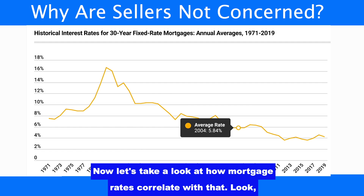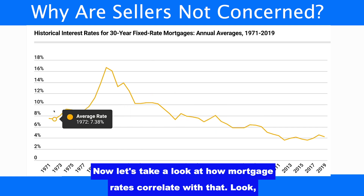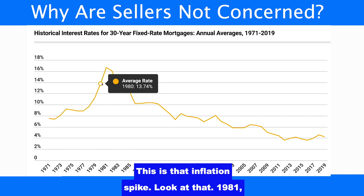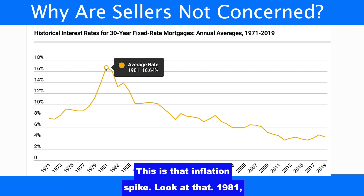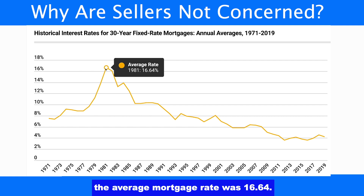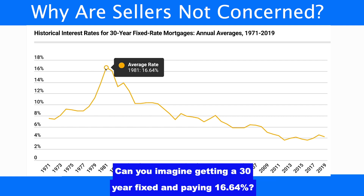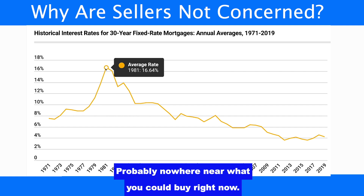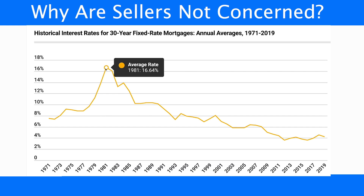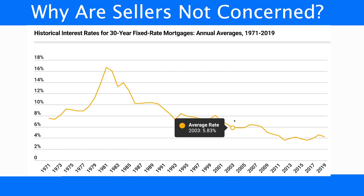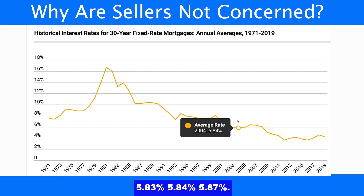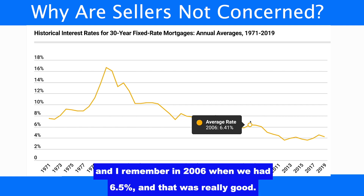Now let's take a look at how mortgage rates correlate with that. The chart should look familiar — early '70s here, this is that inflation spike. In 1981, the average mortgage rate was 16.64%. Can you imagine getting a 30-year fixed and paying 16.64? How much house could you buy? Probably nowhere near what you could buy right now. But what I wanted to bring up was this: the average rate in 2003 was 5.83, 5.84, 5.87. I owned a mortgage company during these times.